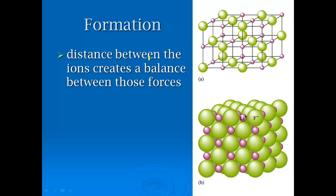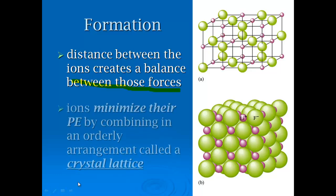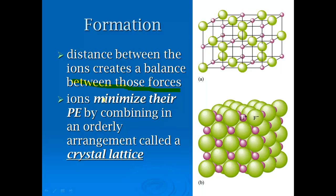The repulsive forces come from similarly charged ions — electrons and electrons of adjacent ions repelling each other. For formation, the distance between these ions creates a balance between these forces, and ions minimize their potential energy by forming orderly arrangement patterns called crystal lattices.